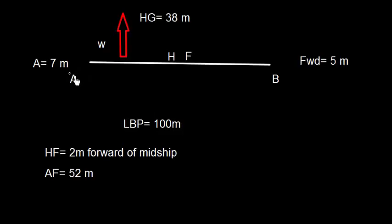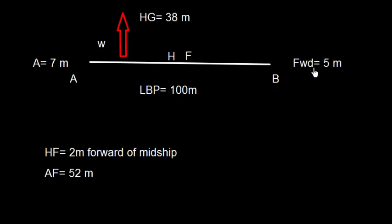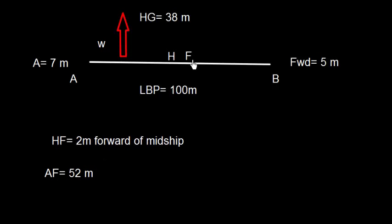In this video, I am going to discuss the effect of discharging on the trim. This is a vessel where the length between perpendiculars is 100 meters, the forward draft is 5 meters, and the aft draft is 7 meters. The center of flotation (HF) is 2 meters forward of midship, so the distance from aft (AF) is 52 meters.